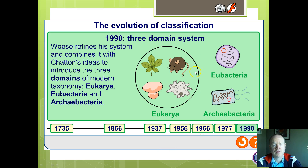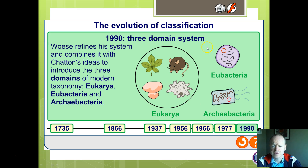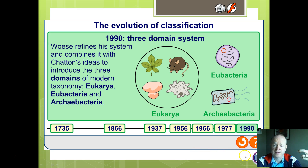However, we've now refined it further into three domains, which sit above the kingdom level. In one domain we have the Eukarya or Eukaryota — things which have a nucleus — and then two different bacterial domains: the archaebacteria and the eubacteria. This is principally based on phylogenetic biochemical evidence.